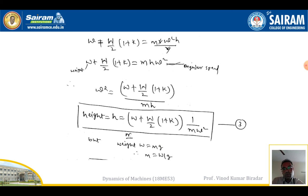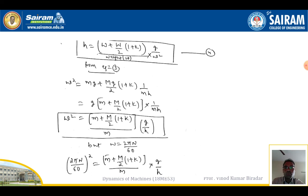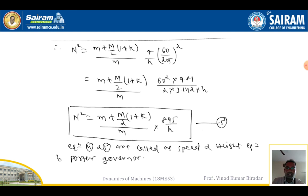Since weight w = mg, substituting m = w/g into Equation 3 gives Equation 4: h = [w + W/2·(1 + k)]·g / (w·ω²). Rearranging Equation 3 gives Equation 5: ω² = [(m + M/2)·(1 + k)] / m · g/h. Using ω = 2πN/60, we get the speed-height equation: N² = [(m + M/2)·(1 + k)] / m · (895/h). This is the key Porter Governor equation.